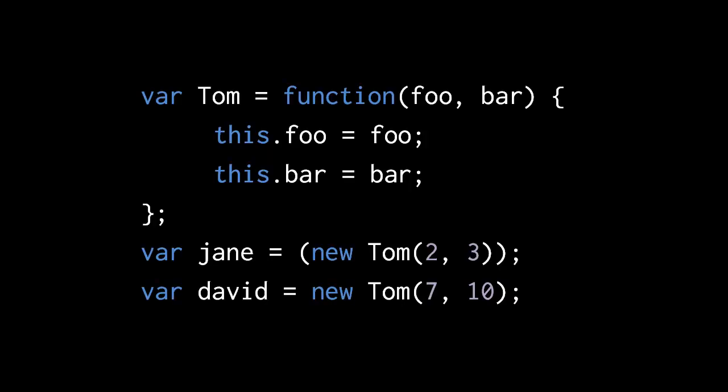We haven't discussed yet how to actually create these links from one object to another. To create such links involves the new operator. The new operator is a unary operator which takes as its operand a call to a function. What happens is that first a new object is created, and that object is passed into the function as the word this. And when a function is called with new, that function always returns that new object — it doesn't return anything else.